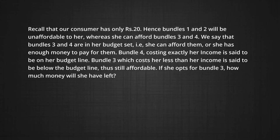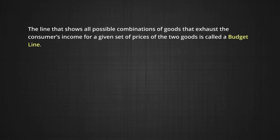Bundle 4 costs exactly her income and is said to be on her budget line. Bundle 3, which costs less than her income, is said to be lower than her budget line but is still affordable. If she opts for bundle 3, how much money will she have left? Notice that she has rupees 7 left over. The line that shows all possible combinations of goods that exhaust the consumer's income for a given set of prices of the two goods is called a budget line.